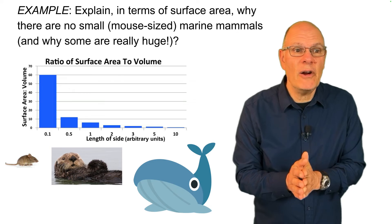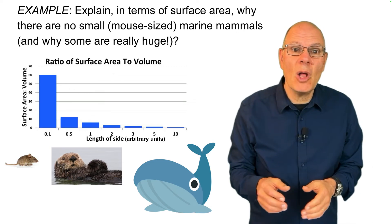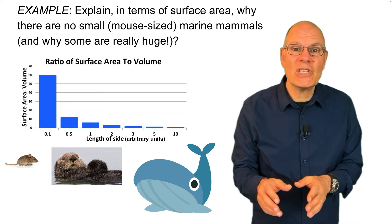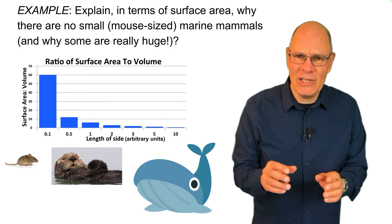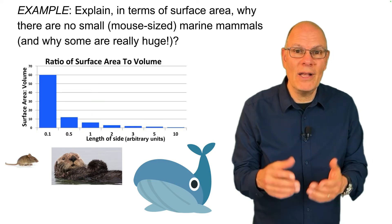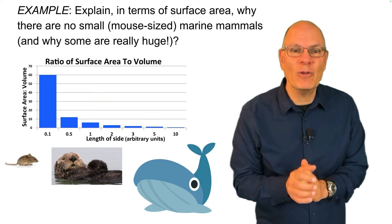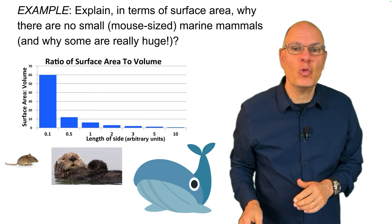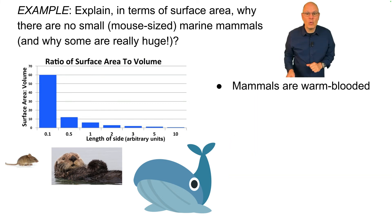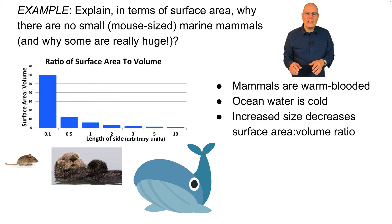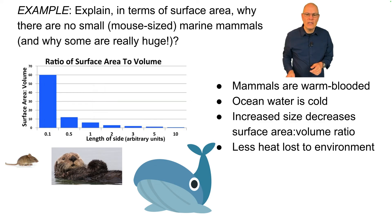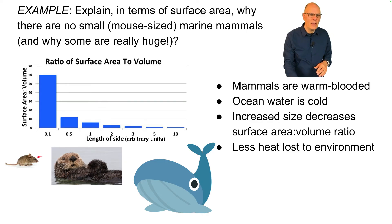Explain in terms of surface area why there are no small mouse-sized marine mammals, and why some marine mammals — like the whales, the largest organisms to have ever evolved — are really huge. Mammals are warm-blooded; ocean water is cold. Increased size decreases the surface area to volume ratio, so there's less heat lost to the environment.